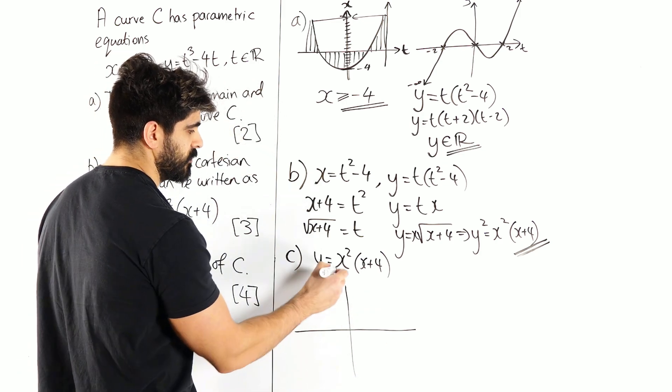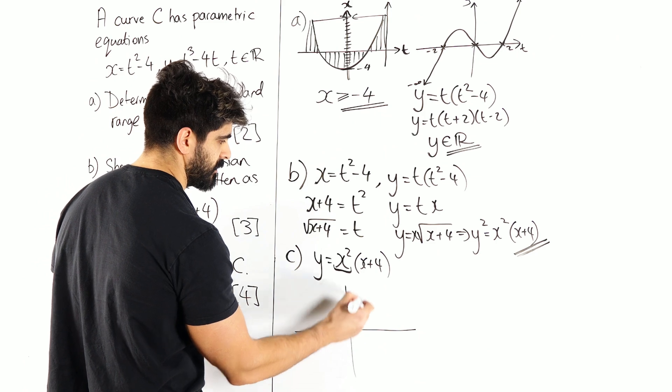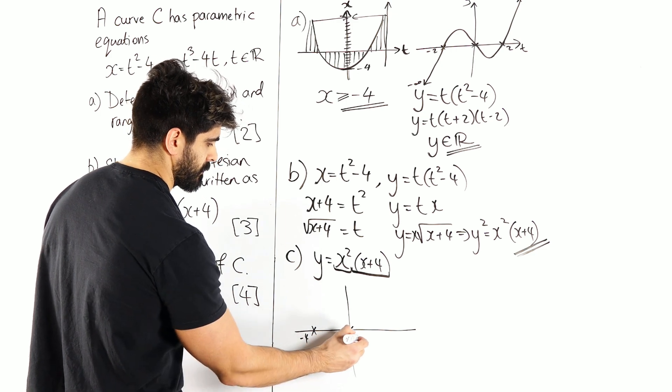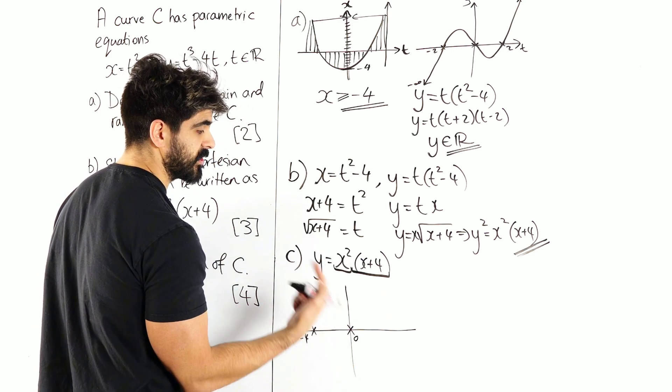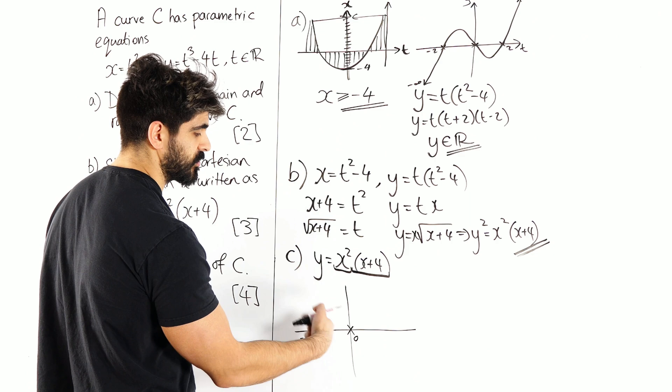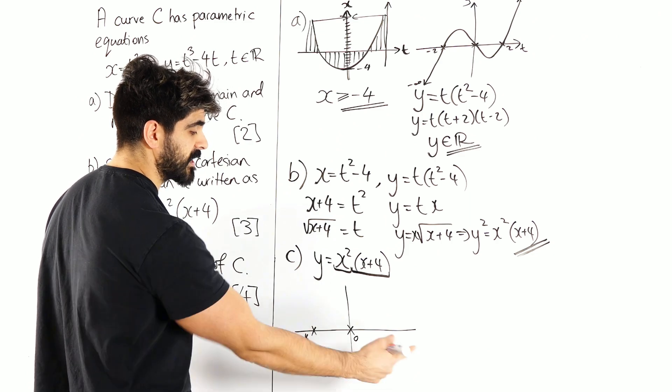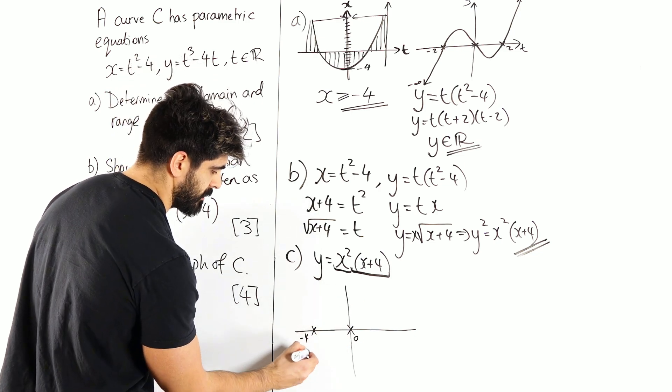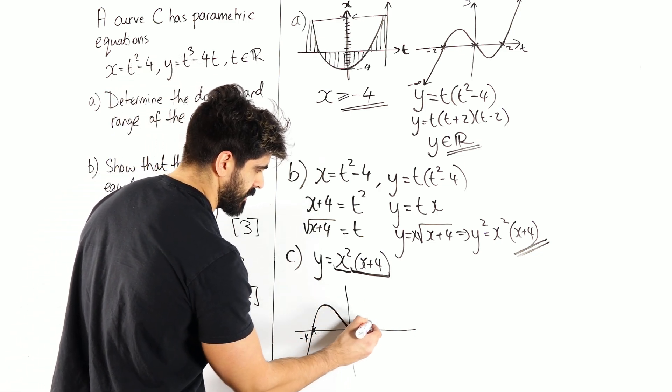So let's see what this would look like if we said y equals all of this. Well, you'd find the roots, so you're going to get x equals 0 and minus 4. Now think about this because it's squared, it's a double root. It's only going to be a tangent to the graph. It's not going to go through. The x-axis is going to be a tangent at that point. And it's a cubic, so it's going to come up like this and look like this.